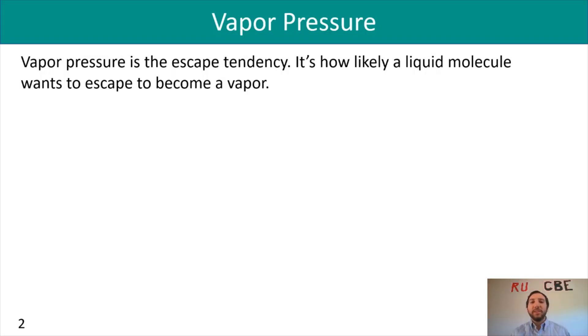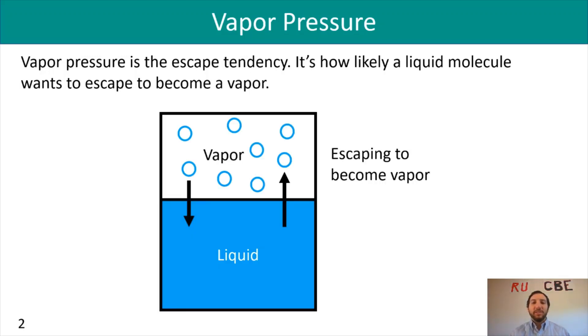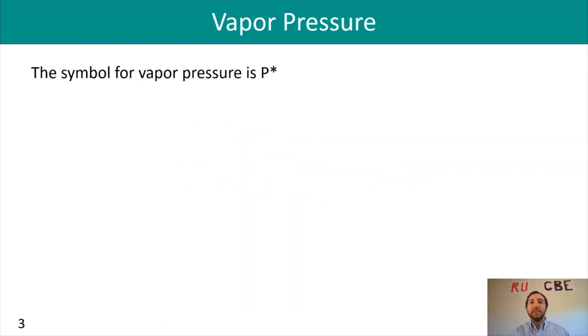Now that you have that background, we're going to dive into vapor pressure. Vapor pressure is the escape tendency - how likely a liquid molecule wants to escape to become a vapor. Every liquid has a different vapor pressure. The higher the vapor pressure, the more likely that liquid wants to escape to become a vapor. I've got a little diagram showing this liquid trying to get out to become a vapor, and that vapor pressure is represented as P star.